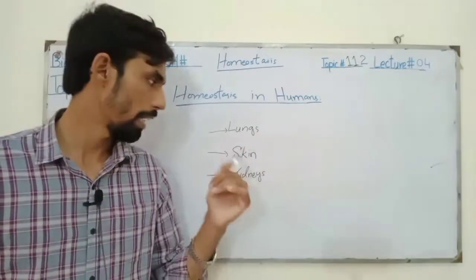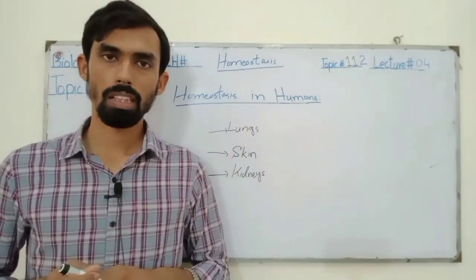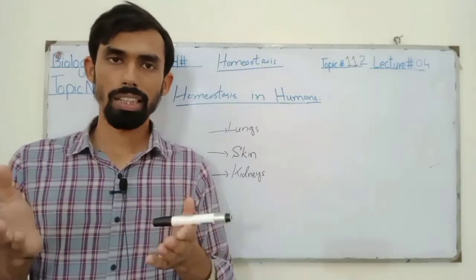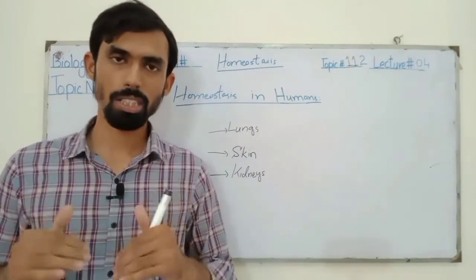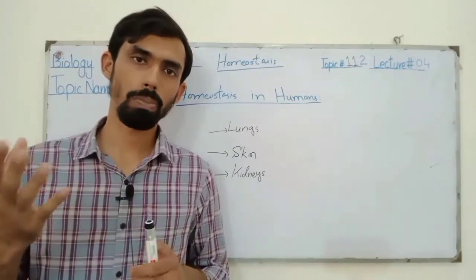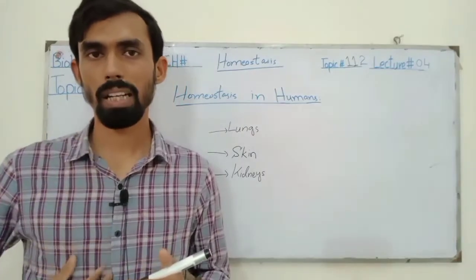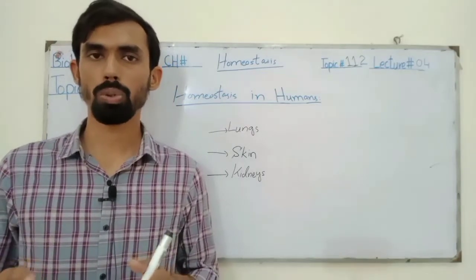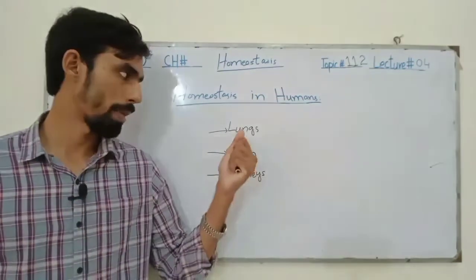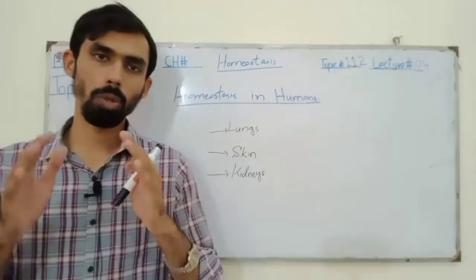First of all, the lungs. How do they maintain homeostasis? We know that the lungs are used in gas exchange. Which gas is expelled? Carbon dioxide. When it is in our lungs, they exhale it out. This gaseous exchange work is mainly done by the lungs, expelling carbon dioxide. This helps balance the body.